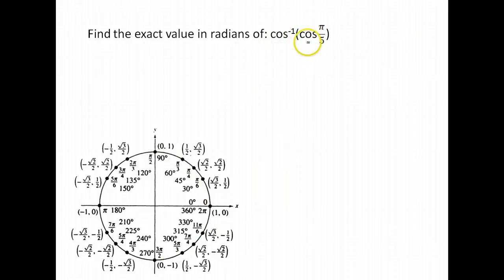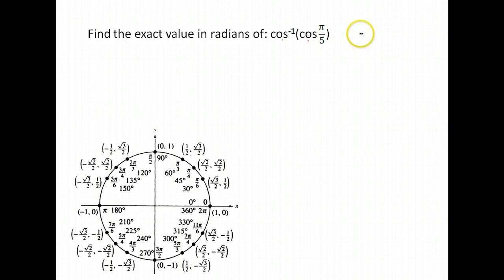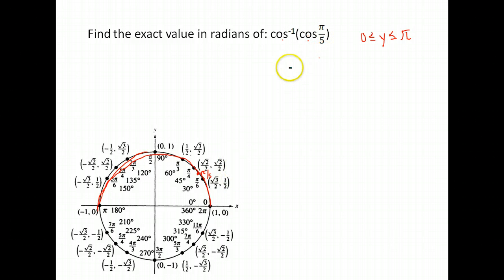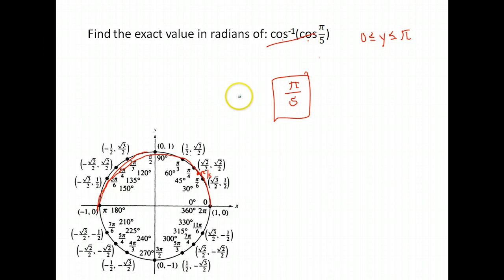Next: the inverse cosine of cosine of π/5. It would be convenient to cancel them out and write π/5, and we can — if it's in the appropriate range. The range for cosine is 0 to π. π/5 is not one of our regular values, but it would be right between π/6 and π/4, so it is between 0 and π. Also, 1/5 is 0.2, which is definitely between 0 and 1. So it falls in the correct range, and the answer is just π/5.